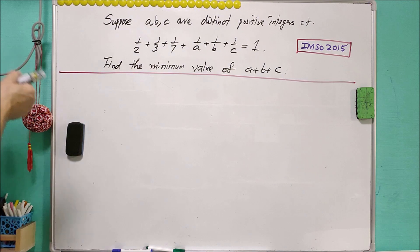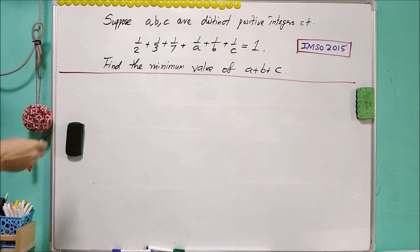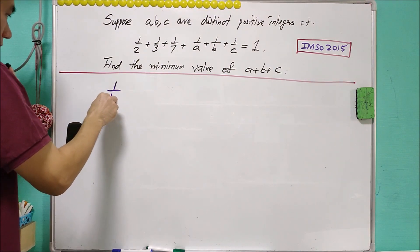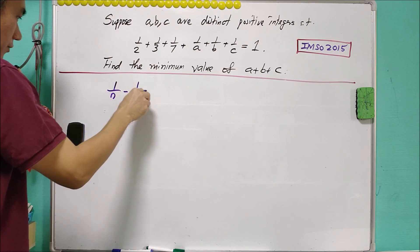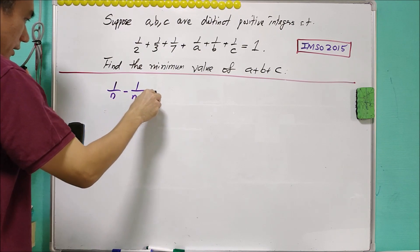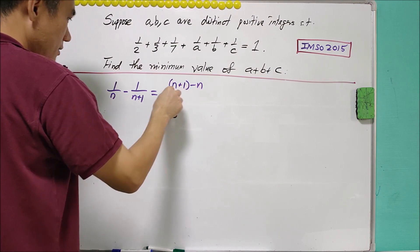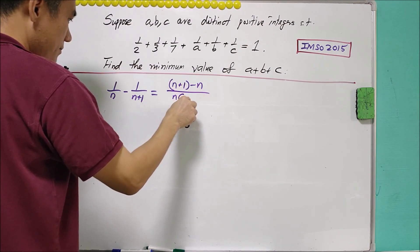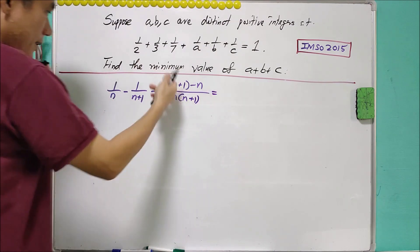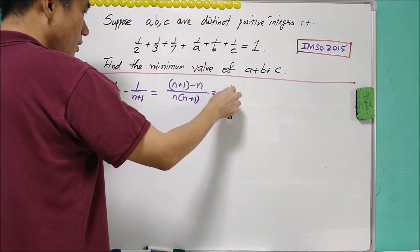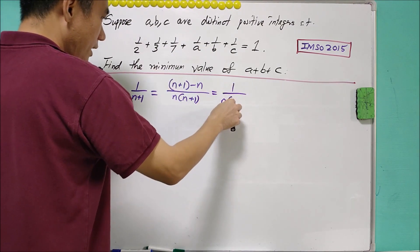Now first of all, it's interesting to note that 1 over N minus 1 over N plus 1 is actually equals to N plus 1 minus N over N times N plus 1. And this actually means that this is 1 over N times N plus 1.